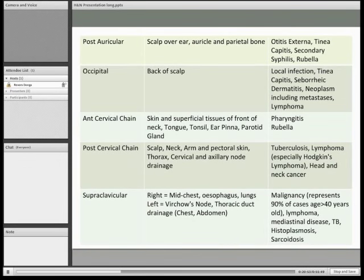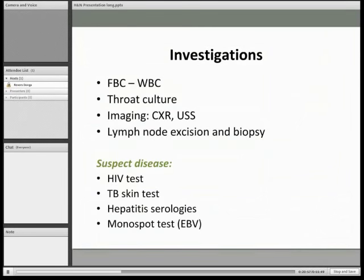Once you've found a suspicious lymph node, you need to find out why it's there. We do investigations: bloods — white blood cell count will indicate infection; imaging; and you can do a fine needle aspirate, biopsy it, and find out what's going on that way. There are also specific tests for associated conditions like HIV, TB, and Epstein-Barr if you're thinking along those lines.